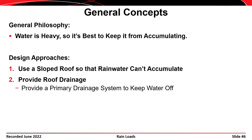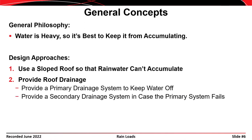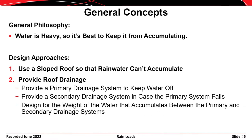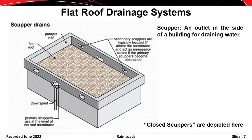When you can't avoid water accumulating on the roof — when you have to use a flat roof — you use a roof drainage system. You provide a primary drainage system to keep water off, a secondary drainage system in case the primary gets clogged or fails, and then you design for the weight of the water that accumulates between the primary and secondary drainage systems.